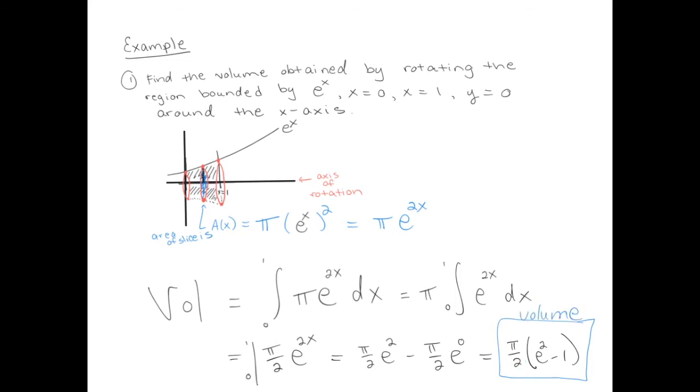Make sure you do get a positive number for your final answer. e squared is something like 2.7 squared. That's definitely bigger than 1, right? So our final answer is positive, the volume is positive, so things are making sense.